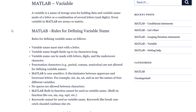For example, 'aa', 'Aa', 'aA', and 'AA' are the names of four different variables. No spaces are allowed between characters.